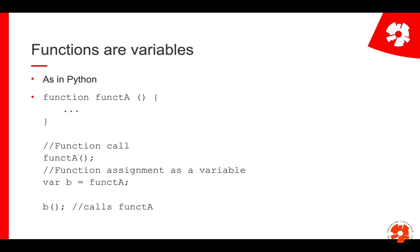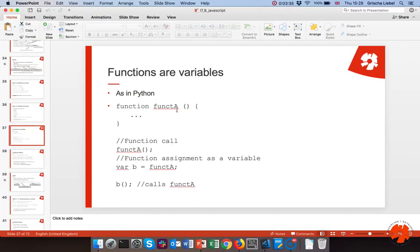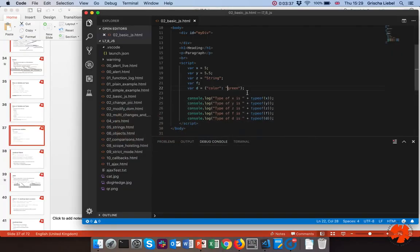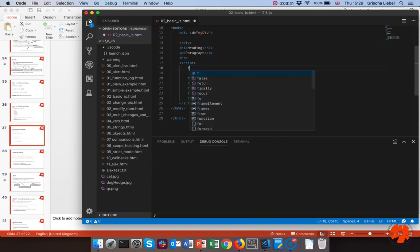Functions are variables in JavaScript as well, similar to Python. You can define a function `funcA` that does something, call it with regular brackets, but you can also assign a function to another variable. Assigning function A to B means you can call B the same way as funcA — this is a call by reference, so B actually becomes a reference to function A.